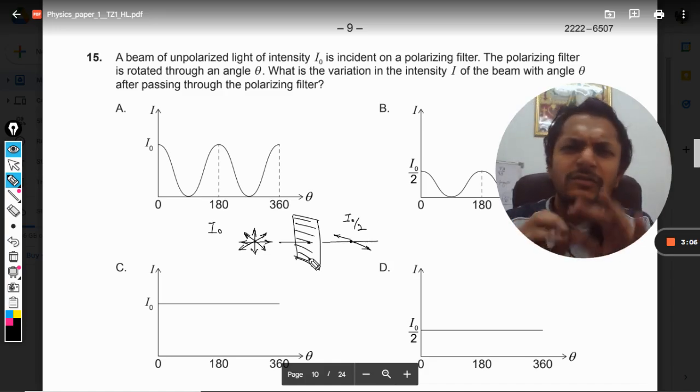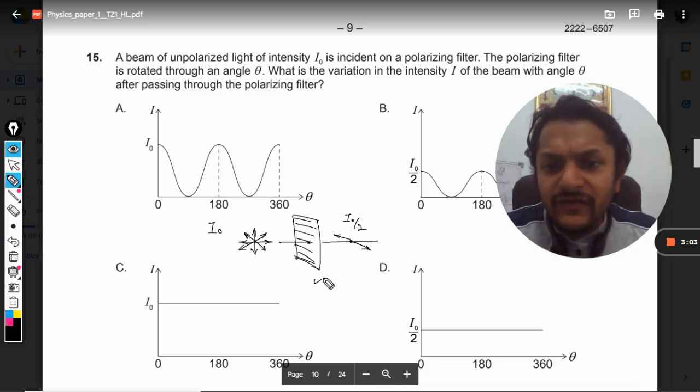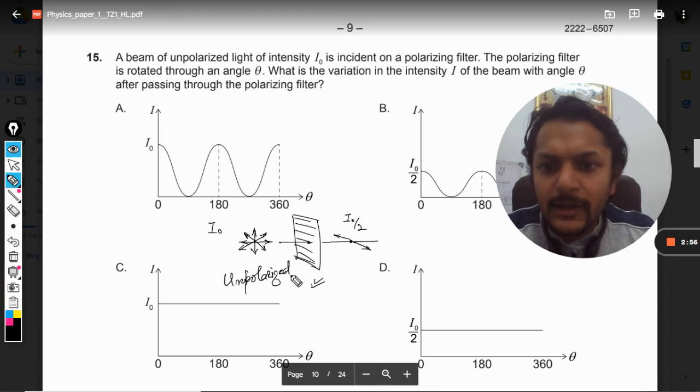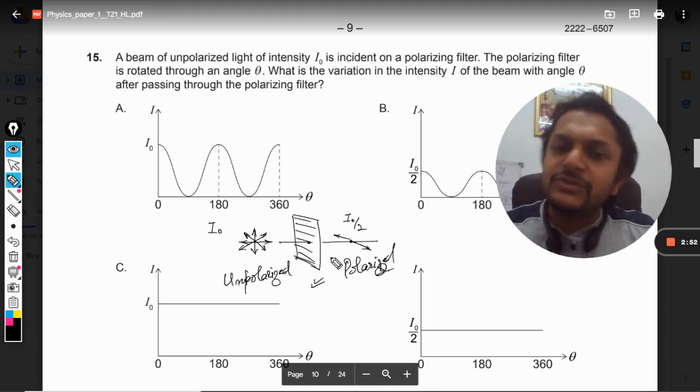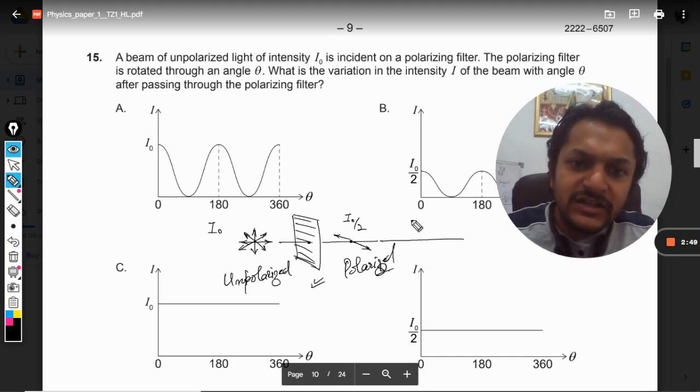But what if there is another polaroid here which is placed at some certain angle to this? Then only the Malus's law will come into the picture.